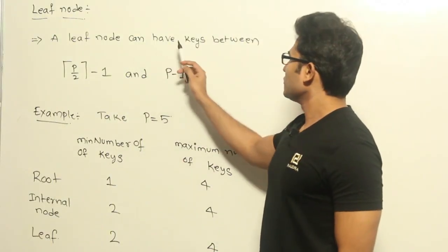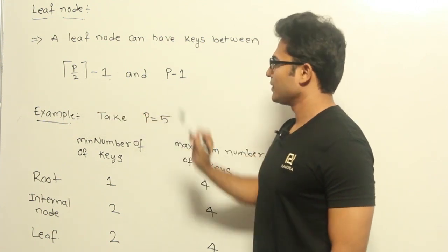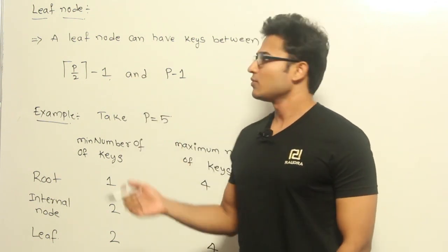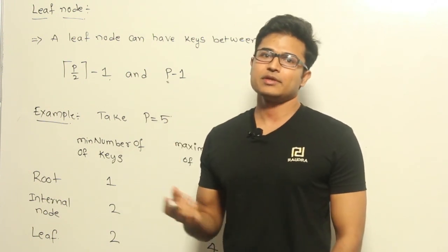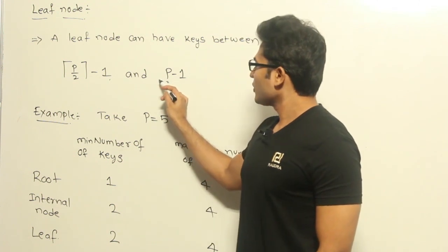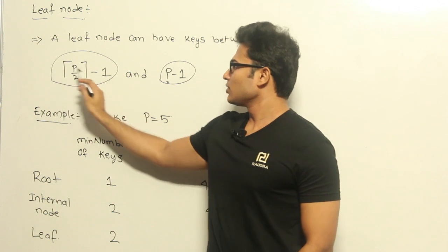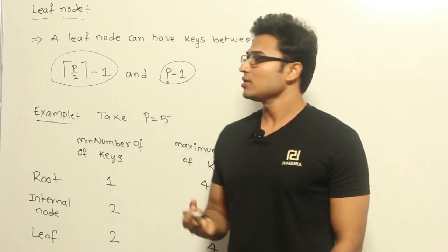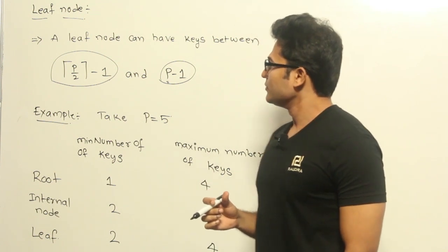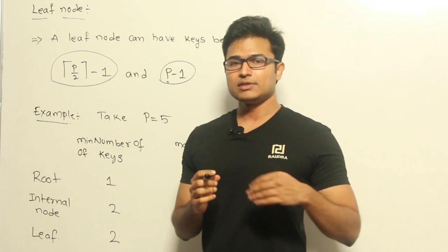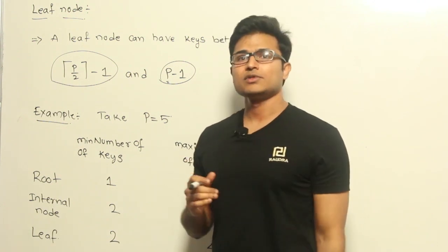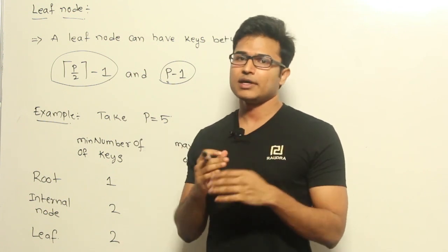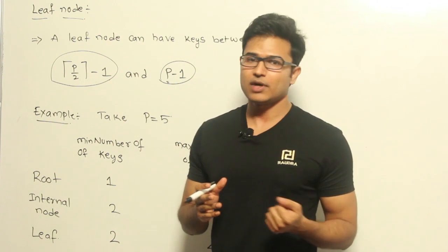Now let's examine the leaf node. A leaf node can have keys between P/2 minus 1 and P minus 1. Here we do not talk about children because a leaf node is not supposed to have any children. So once you calculate P, the maximum number of children that can be present, the number of keys it can have ranges from P/2 minus 1 to P minus 1 — exactly the same as internal nodes. Also, one important point in B-trees is that the leaves are all at the same level, meaning the distance from the root to any leaf is always the same. In B-trees, we generally don't increase levels the way you see in binary trees; I will show it with examples later.